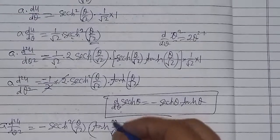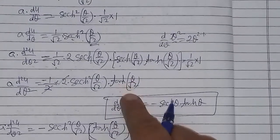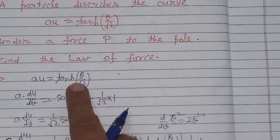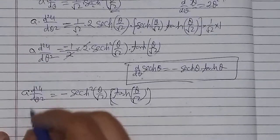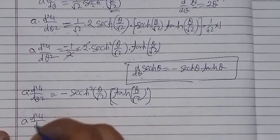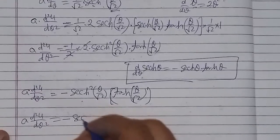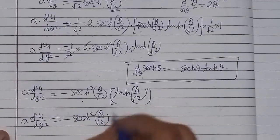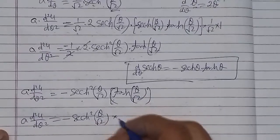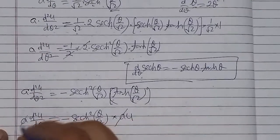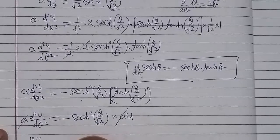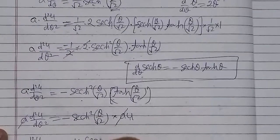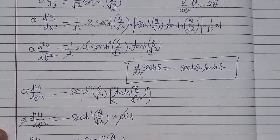Ab tan hyperbolic theta upon root 2 hai. Toh isko dekhi hai shuruaat mein, yeh value likhi hui hai equation number one mein. Equation number one se iski value ko u ke replace karenge. Toh left hand side mein hamara hai: a into d2u over d theta square is equal to minus sec hyperbolic square theta upon root 2. Aur tan hyperbolic theta by root 2 ki jagah equation number one se a into u rakh denge. Isse a se a bhi cancel ho jayega. Aur hume d2u over d theta square ki value: minus u into sec hyperbolic square theta upon square root 2.